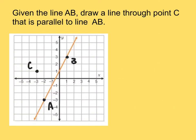On this example, given line AB, draw a line through point C that is parallel to line AB. The first thing we have to do is calculate the slope M of AB. The slope of line AB — we can look at the stair step and say that we go up two over one, up two over one, and so on. We could also say up six over three, but our slope for line AB is going to be two over one.